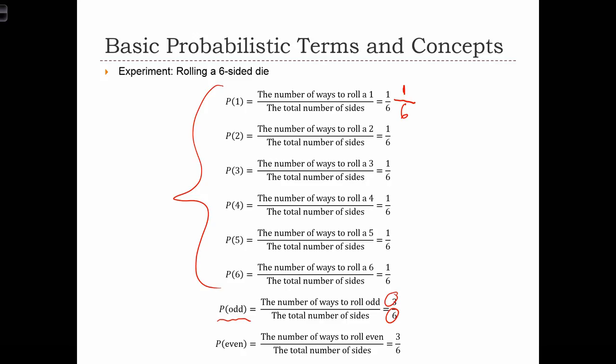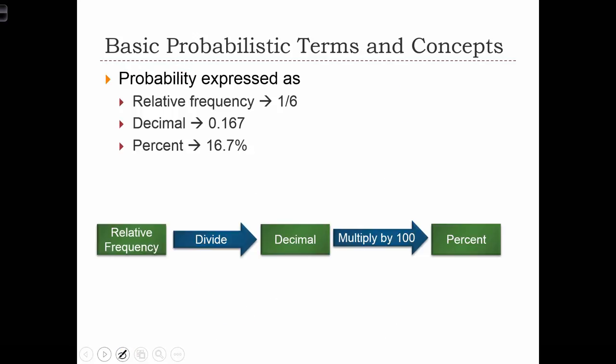Similarly, for even, we have three possible ways to roll an even number, a two, a four, and a six. And therefore, 50% of the time, or three-sixths of the time, we would expect to see an even number being rolled.